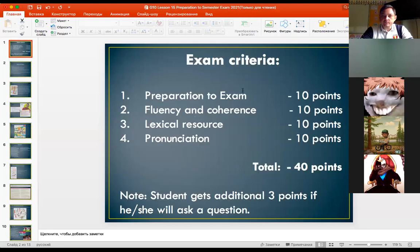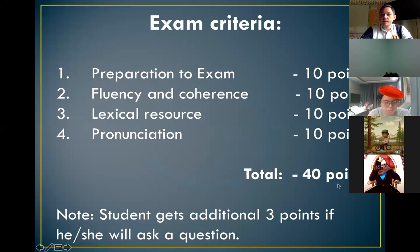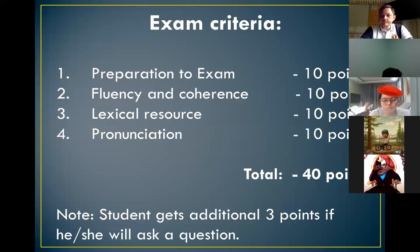Okay guys, nice to see all of you. Let me share my screen and review what you have to prepare and what the requirements are. You will get a total of 40 points. It consists of: preparation for exam — 10 points, fluency and coherence — 10 points, lexical resources meaning vocabulary — 10 points, and pronunciation — 10 points. Total is 40 points. Also, there is a note: a student gets an additional 3 points if they ask a question, so feel free to ask a question about a related topic.